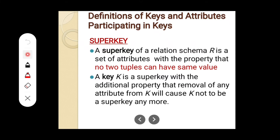But while primary key has only a single attribute, in a super key there can be multiple attributes or a set of attributes. This is called a super key — super key of a relation schema R. R means a table, R is a relation or table. It is a set of attributes with the property that no two tuples can have the same value. Tuples means rows or records in a table.